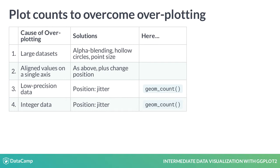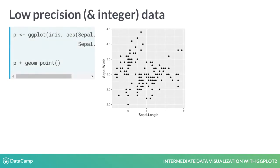geom_count plots the count at each location. In course three, we'll see even more elegant solutions that can be applied to all four situations. Let's look at an example with geom_count. In the iris dataset, where we have low precision data, jittering gives the impression that we have more precision than we actually do.